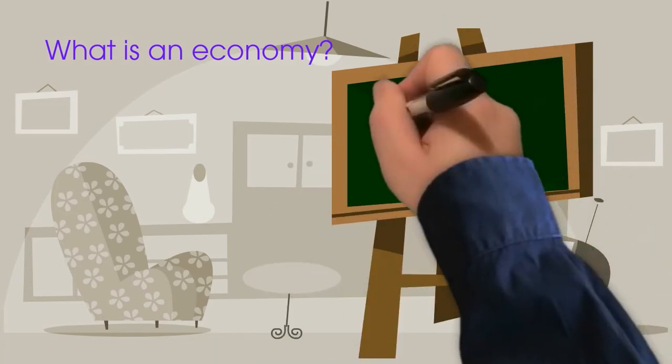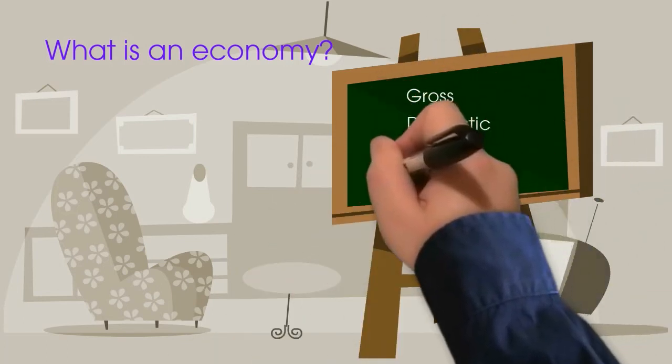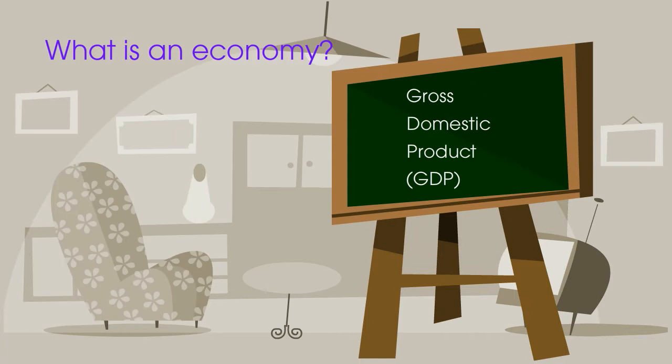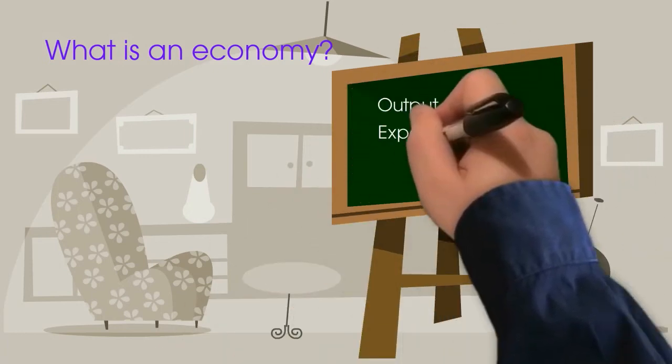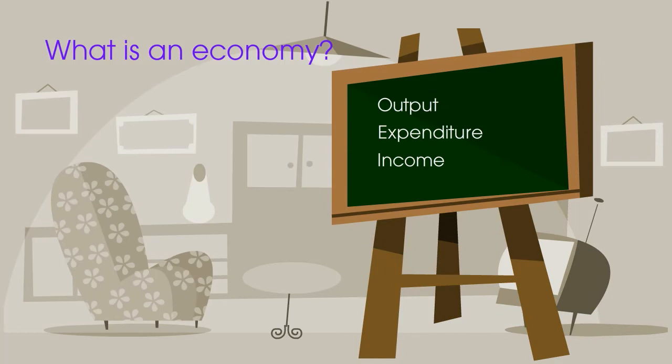The usual way of judging the size of an economy is to look at something called gross domestic product. There are three ways to measure GDP, which every way you use you should end up with the same figure. The three ways are: the value of all goods and services produced by all sectors of the economy, that's called the output measure.